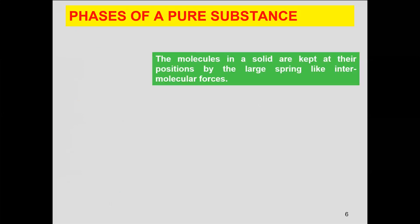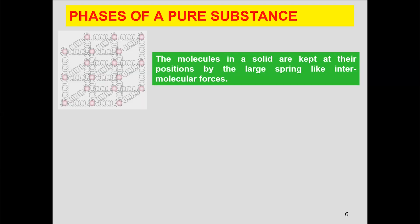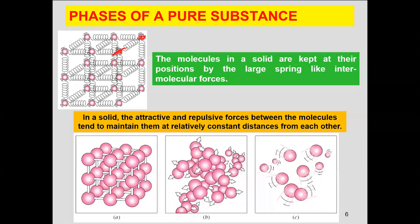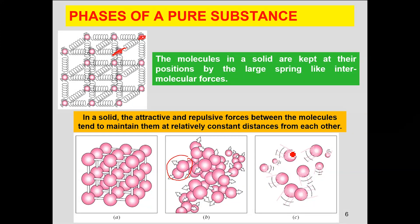In the gaseous phase, molecules are far apart and molecular order is essentially non-existent — they continue to move randomly, colliding with each other and the walls of the container. In solids, atoms are like they are attached with springs having intermolecular forces, vibrating at their positions but not allowed to move freely. In liquids, chunks of molecules break away and move freely, whereas in the gaseous phase there is no specific pattern or order followed by atoms or molecules.